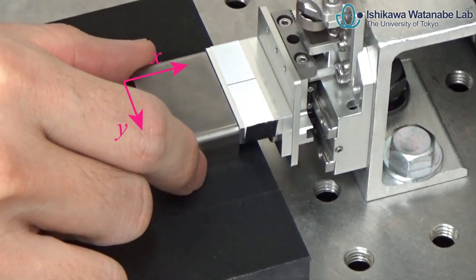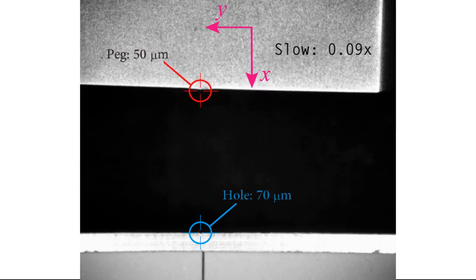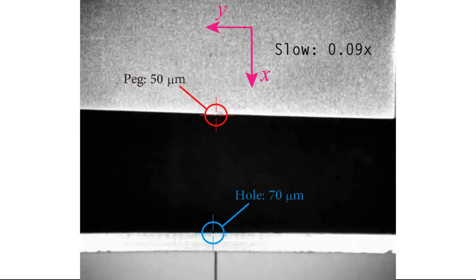As a result, the robot cooperates to achieve micron order peg-and-hole manipulation while the human conducts a rough insertion motion along the X direction.